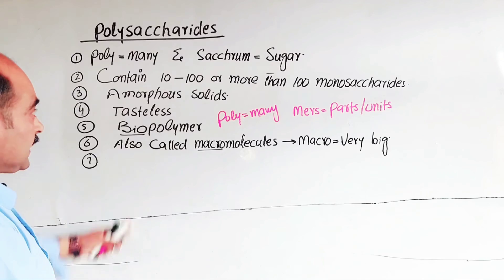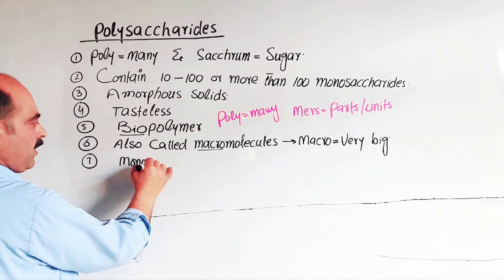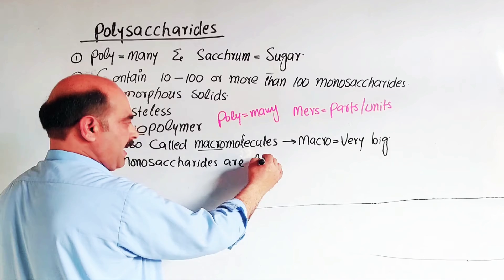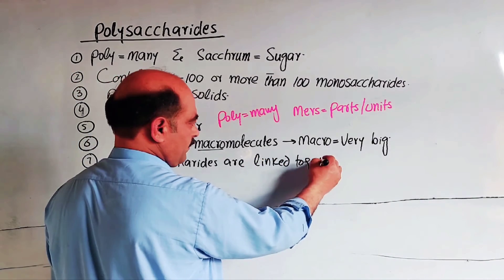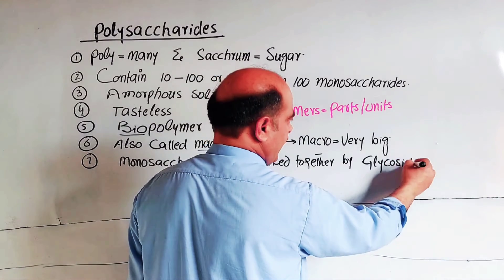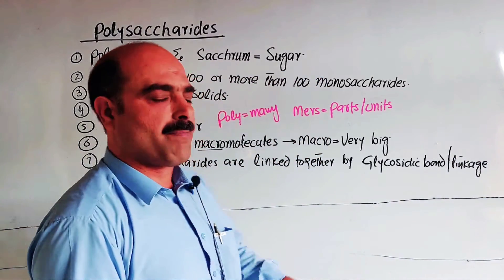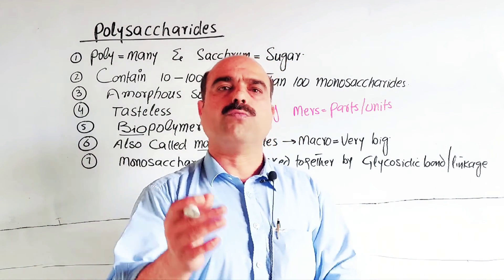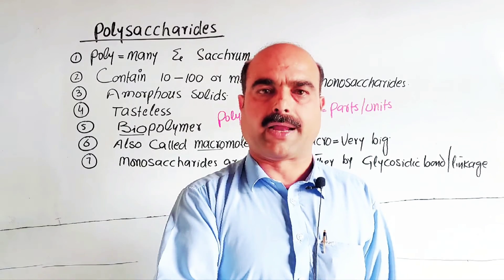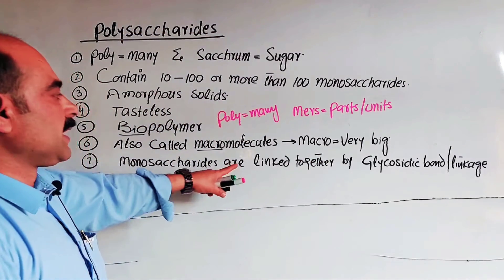Property number seven: in polysaccharides, the monomers — which are monosaccharides — are linked together by glycosidic bonds. What is a glycosidic bond or glycosidic linkage? It is the bond formed when two monosaccharides combine with the removal of a water molecule. The monosaccharides are combined via glycosidic bonds to form the large polysaccharide structure.